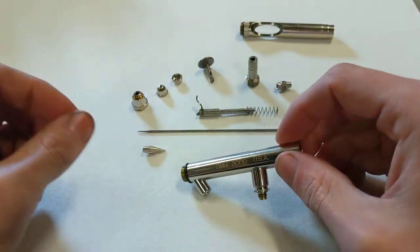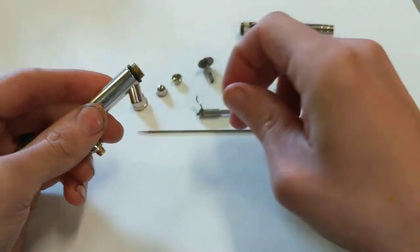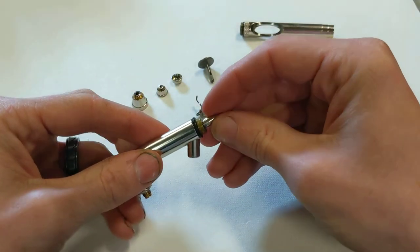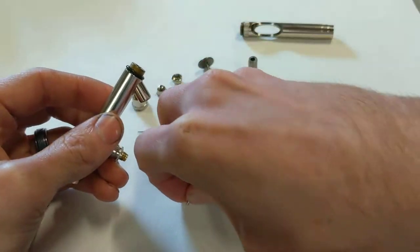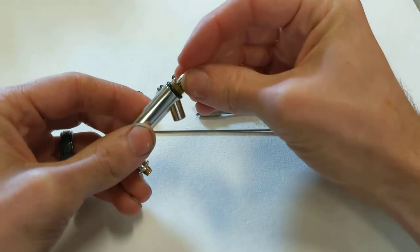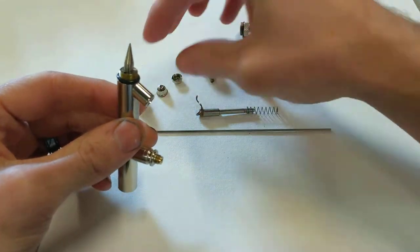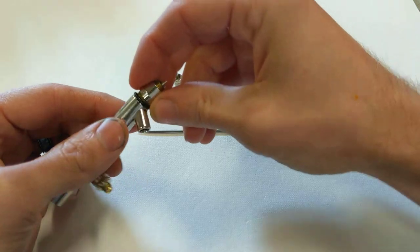Now we're going to put it back together, starting with the cone, the tip. Set it inside. Gravity should hold it in place. And put that first cap on.